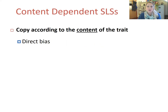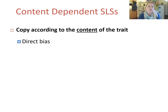Content-dependent social learning strategies are considered direct biases, as individuals copy another according to the content of the behavioural trait that they exhibit, rather than according to contextual factors like the individual's characteristics, which would be a model-based bias.